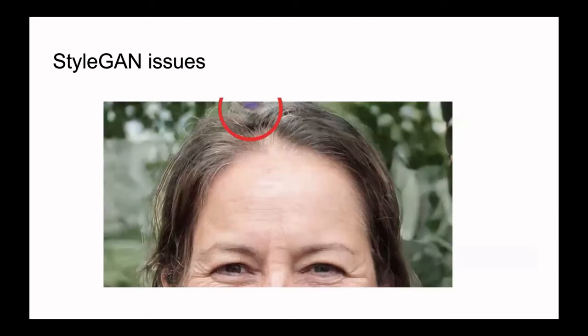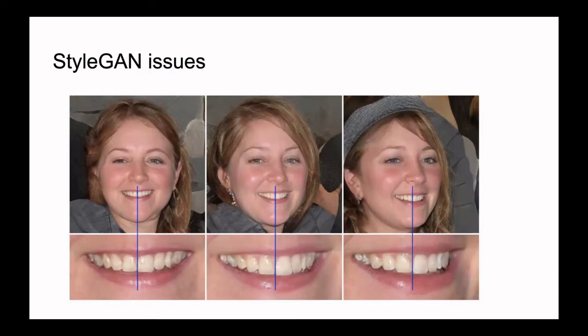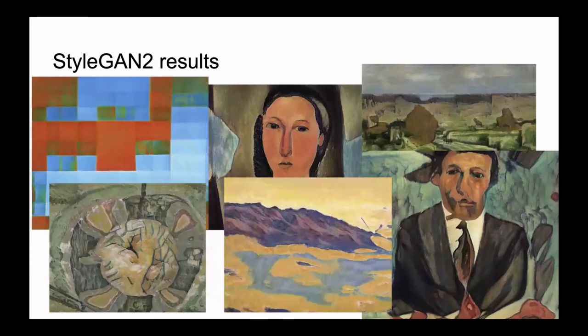StyleGAN also has some problems with output images. First is droplet artifacts — kind of blobs on images in random places, which is not nice. Also, for example in the face domain, when you try to turn a face, the face would turn but the teeth of the person wouldn't turn, which is not good.